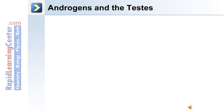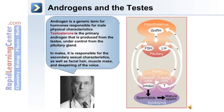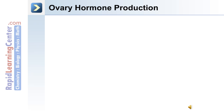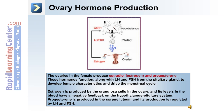In males, the gonads are the testes, which produce androgens. Androgen is a generic term for hormones responsible for male physical characteristics, and the primary androgen is testosterone, produced from the testes under control of the pituitary gland. Testosterone is responsible for secondary sexual characteristics, including facial hair, muscle mass, and deepening of the voice. In females, the gonads are the ovaries, which produce estradiol, or estrogen, and progesterone.